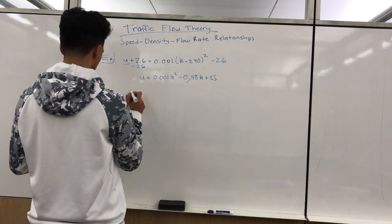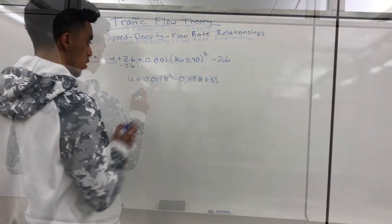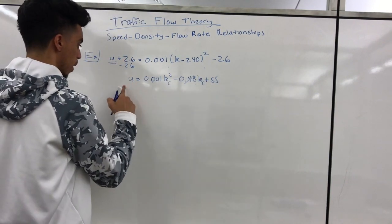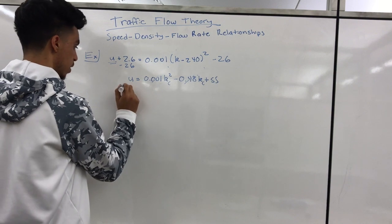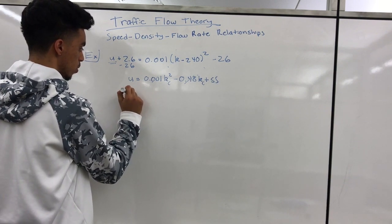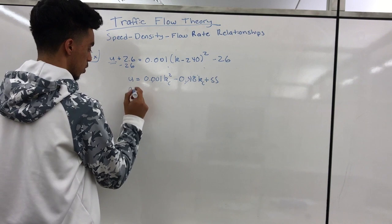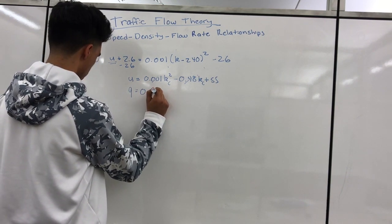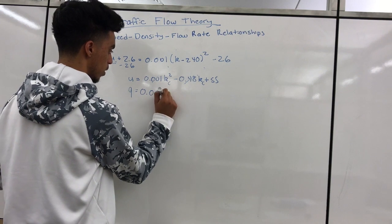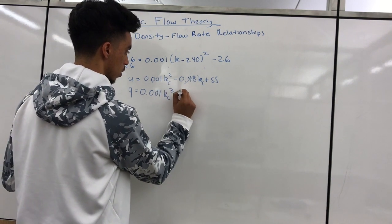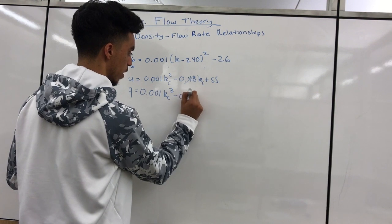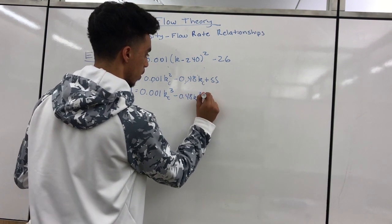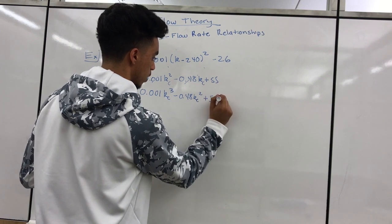For the next step, we multiply both sides by k to get q, since q equals u times k. Doing that gives us q equals 0.001k cubed minus 0.48k squared plus 55k.